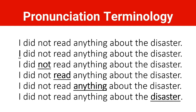The sentence is: 'I did not read anything about the disaster.' With no stress, it's neutral. But if I stress the first word — the subject 'I' — I'm focusing and emphasizing on the doer of the action: 'I did not read anything about the disaster' — not you, not Ellie. But if I stress the word 'not,' I'm emphasizing the non-occurrence of the action: 'I did NOT read anything about the disaster.'